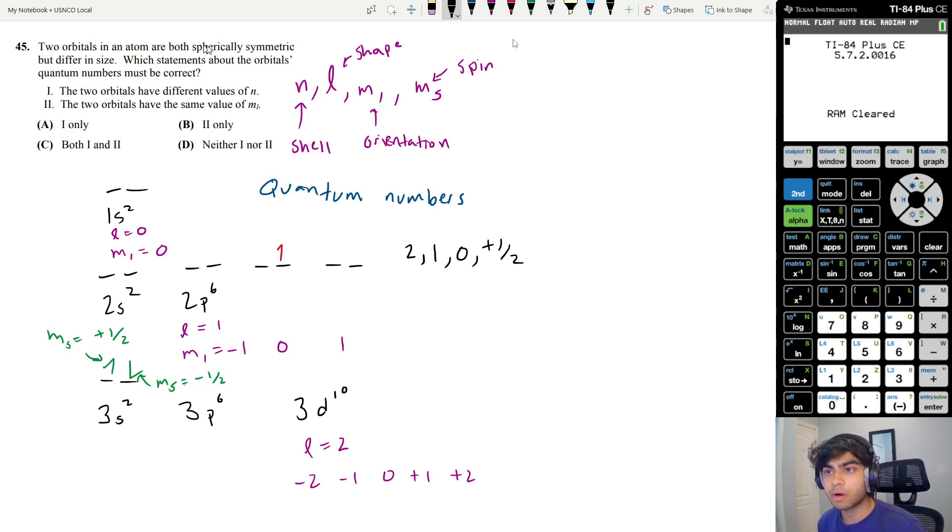Let's go back to our problem statement. We're told that two orbitals are both spherically symmetric, but differ in size. We want to find out how this affects the quantum numbers of the orbitals. This is true, because we're told that they're both spherically symmetric, meaning they're both s orbitals, but they vary in size.